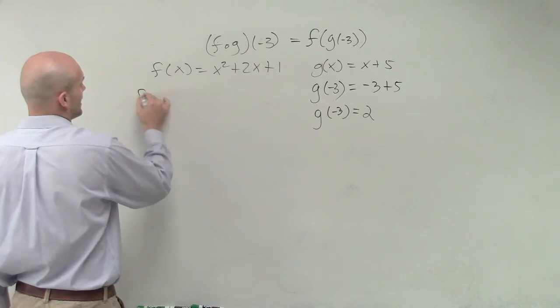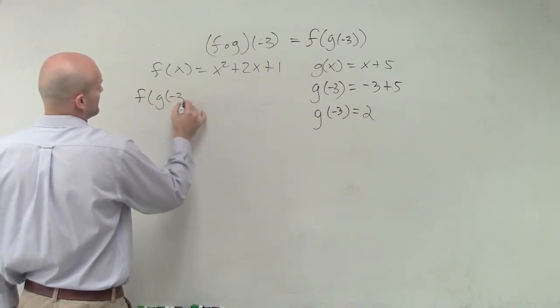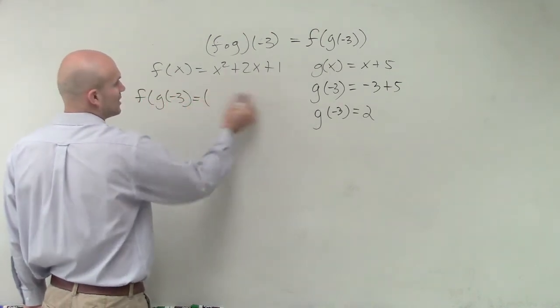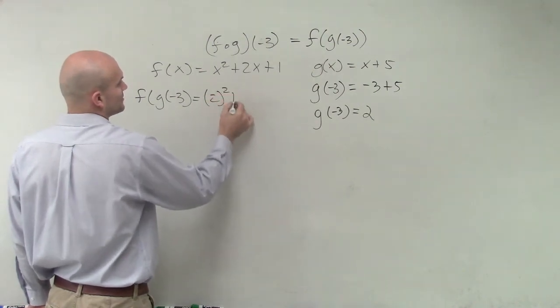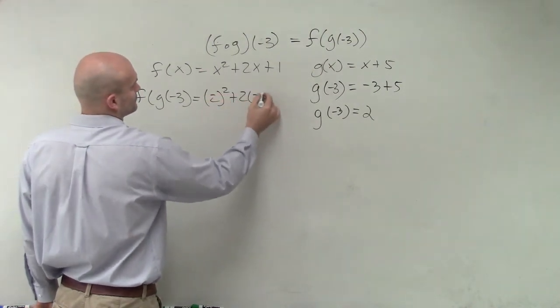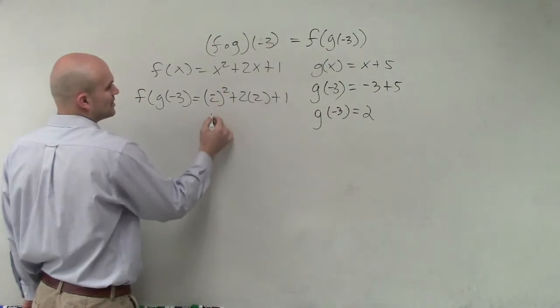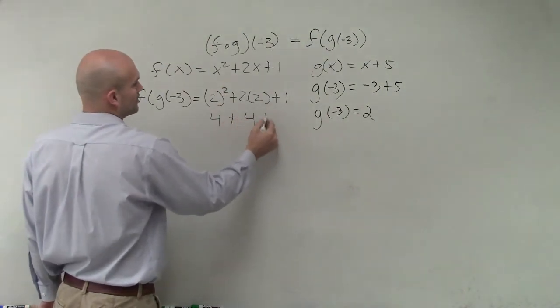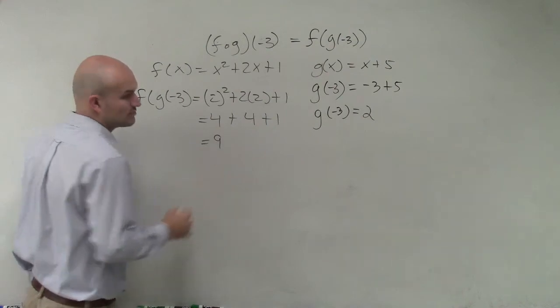f of g of negative 3 equals—now I'm going to plug in 2 into my f of x function. 2 squared is 4, plus 4, plus 1 equals 9.